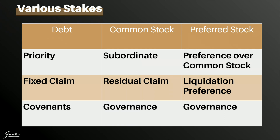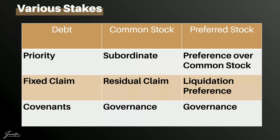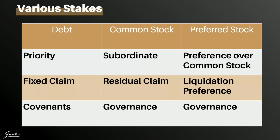Preferred stock is a mix of common stock and debt. It has a preference over common stock, typically including a liquidation preference: if the company is sold or dissolved, preferred investors get their investment back first — similar to debt — before common stockholders receive anything, which subordinates common stock even further. When it comes to governance, preferred stockholders get special rights rather than standard voting rights, such as designated board seats or the right to veto certain transactions. We'll discuss preferred stock in much more detail in other videos.